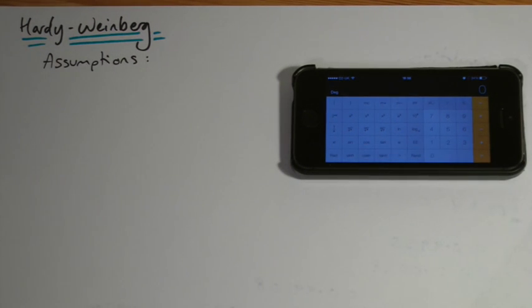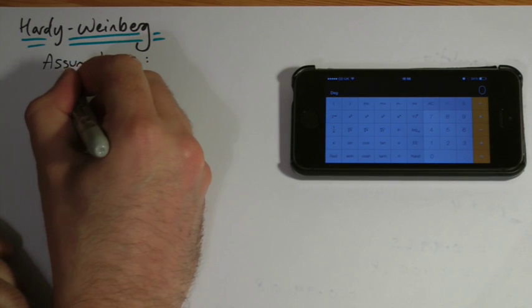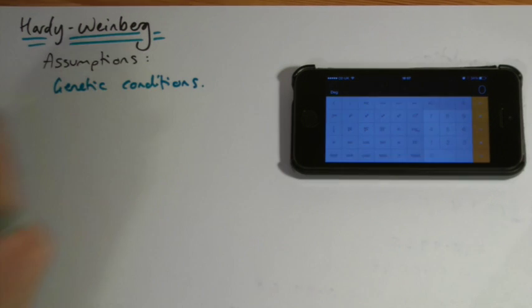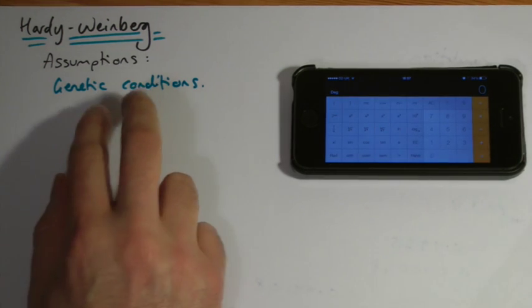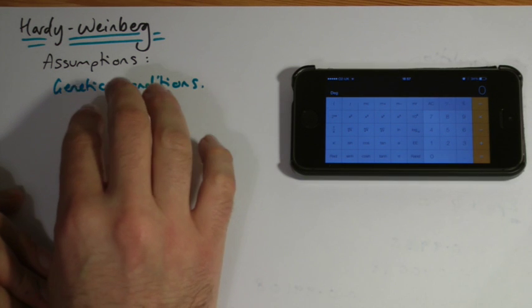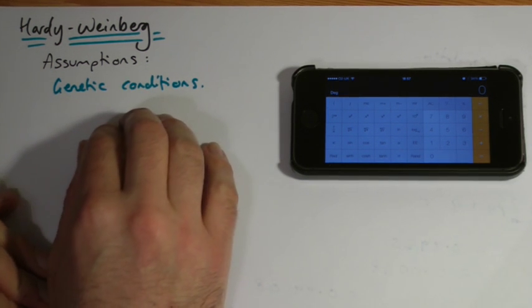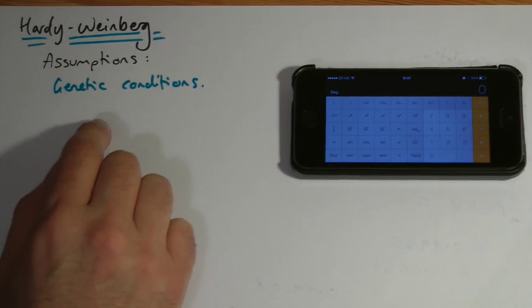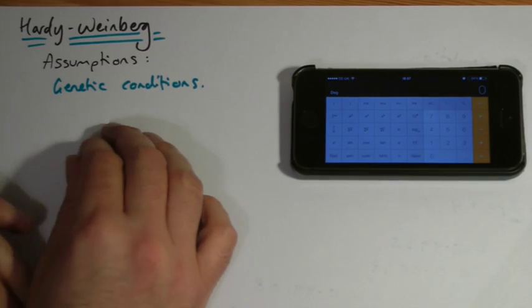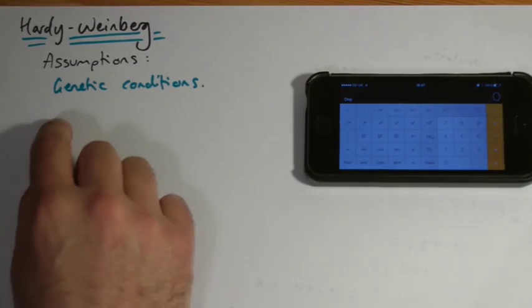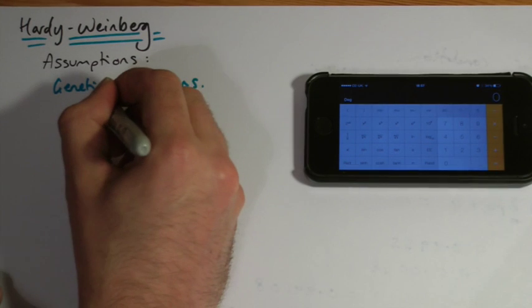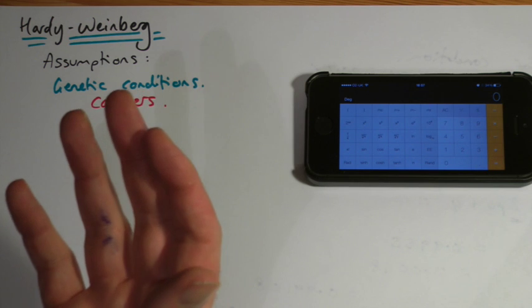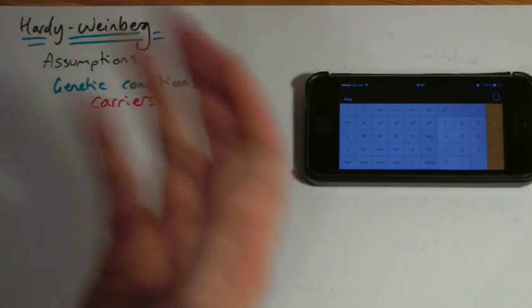So Hardy-Weinberg is all about genetic conditions really, and what they're trying to do with it is, it's a bit of a mathematical trick really, to work out probabilities of allele combinations being present. More importantly, it's useful for working out heterozygotes in a population. Why is this important? In the case of a genetic condition, you could be looking here for people who are carriers of a certain condition. So how many people are carrying that allele in the population? Do we need to screen for it?